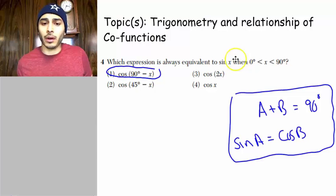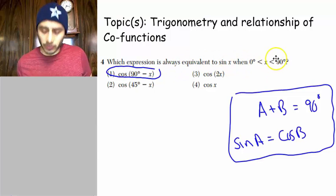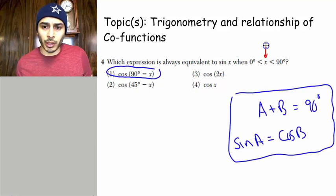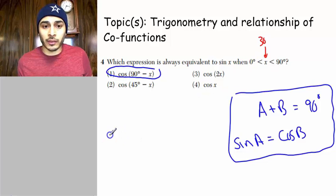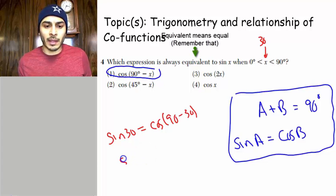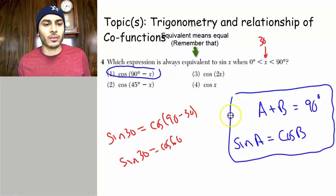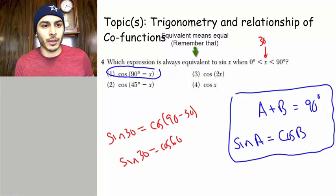Another thing you could have done for this problem is you could have just made something up for x. Just plug something in there, some number between 0 and 90. I don't know, like 30, like we just used. And then you would see, the sine of 30 is equal to the cosine of 90 minus 30. So that would mean the sine of 30 is equal to the cosine of 60, and we know that's true. We just saw that in the calculator.